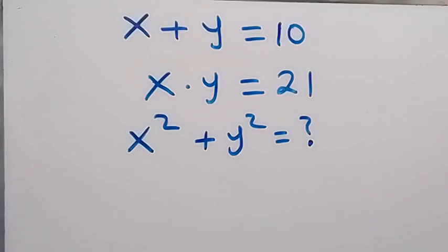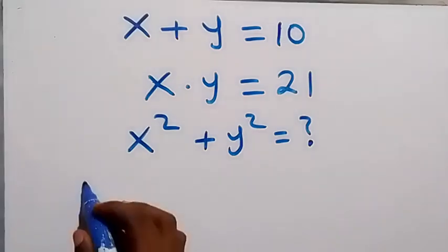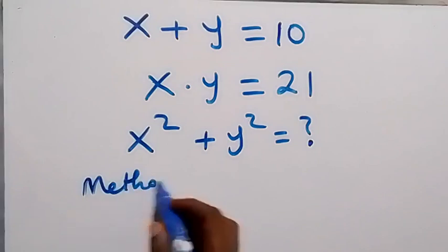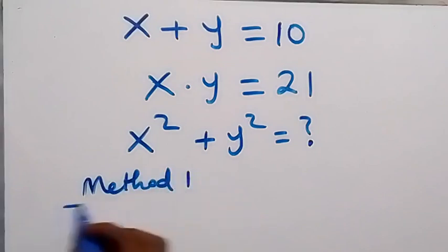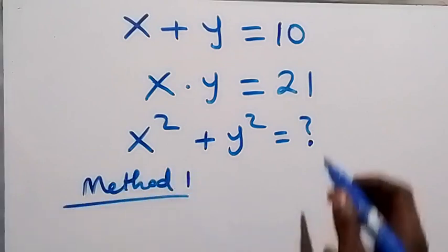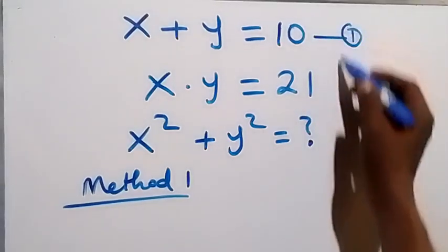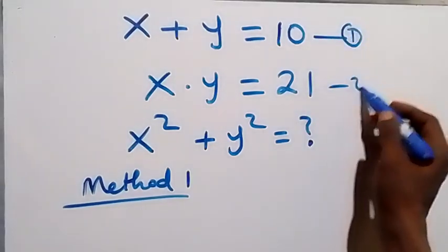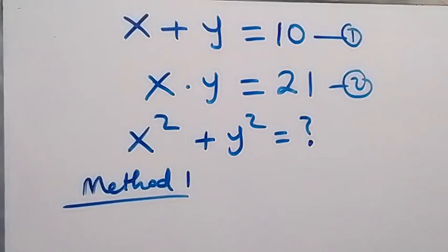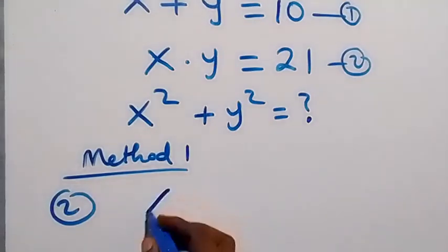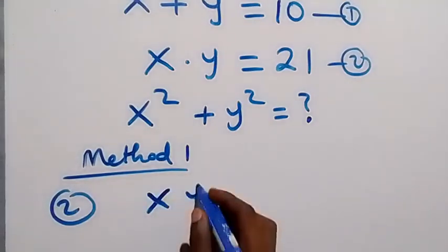Here we have two methods. The first one, Method 1 — from here, let's label this as equation 1, this as equation 2, and from equation 2 we have x times y equals to 21.